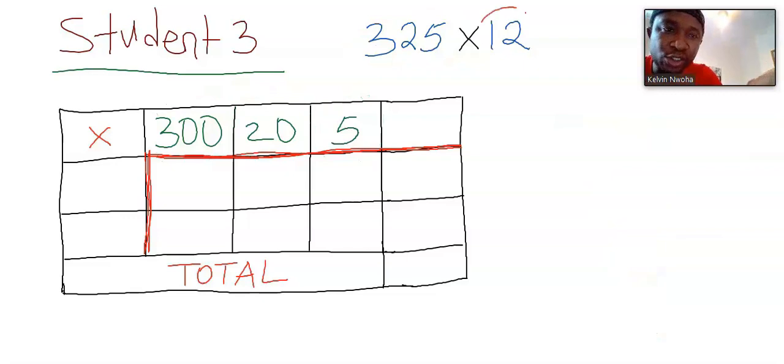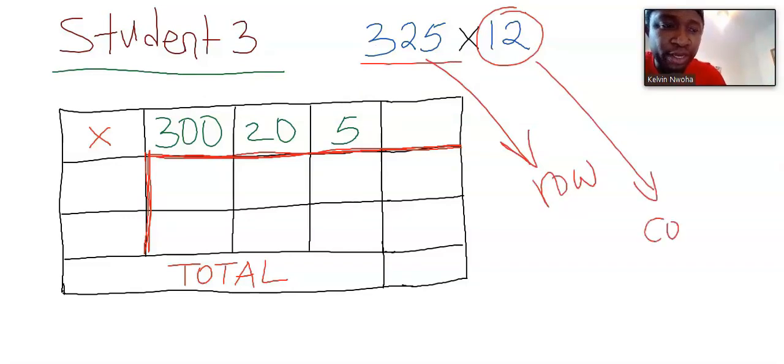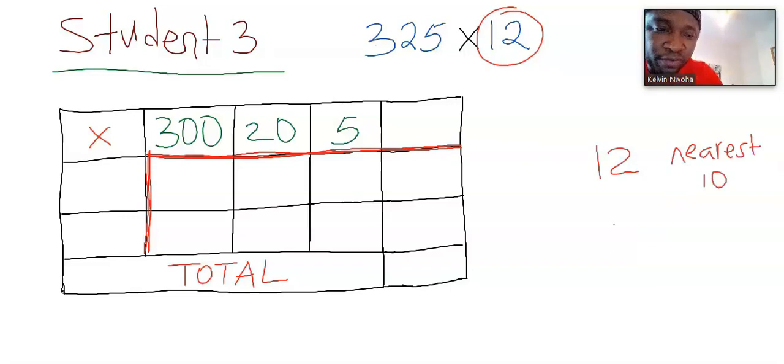Next, consider 12. 325 went to the row, and 12 is going to the column. Nearest 10 of 12 is 10. Hence, I will write 10 here. Remaining 2, and I'm going to write the 2 here.